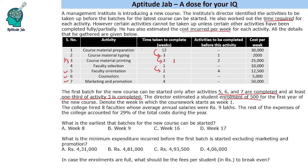So the first day when this preparation process starts is counted as week 1. The college had 8 faculties whose average annual salaries were rupees 9 lakhs, so 72 lakhs is the expenditure there. The rest of the expenses of the college accounted for 29% of the total cost during the year. So there are 8 faculties, their expenditure is this, and then there is remaining expenditure of 29%.